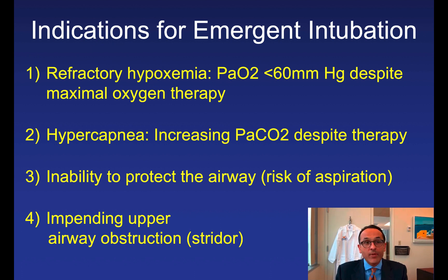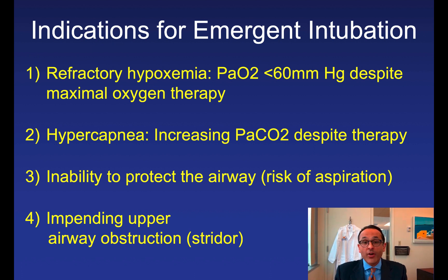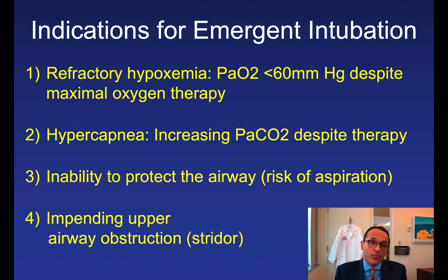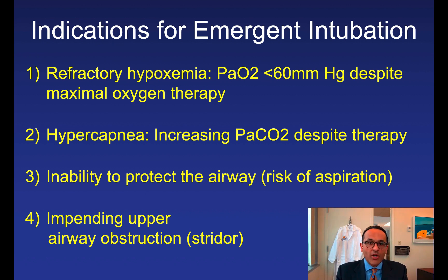First, refractory hypoxemia — is the PaO₂ less than 60 despite maximum oxygen delivery? Second, increasing PaCO₂ despite therapy, indicating the patient may be tiring out with very high work of breathing. Third, inability to protect the airway — mental status is key here; if they vomit and aspirate they could develop ARDS, or if they need a procedure and are altered, consider intubating to protect the airway. Fourth, upper airway obstruction — though if complete upper airway obstruction is present, intubation won't help and cricothyroidectomy is necessary. However, for anaphylaxis with stridor and hives, there is a very low threshold to intubate until steroids and other medications kick in.